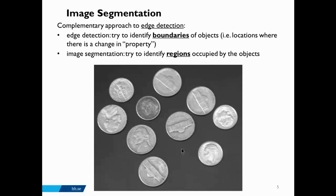We could see image segmentation as a complementary approach to edge detection. With edges we try to identify boundaries of objects, and with segmentation we try to identify the regions that are occupied by these objects. In theory, edges should also be a way to segment regions, but it's not always the case. For instance, some edges might produce errors or could be misleading to the system, so edges could be used for segmentation but not always.